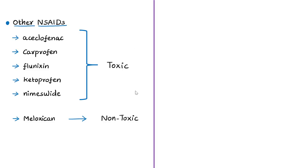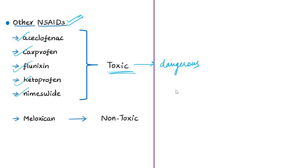According to BirdLife International, diclofenac is only one of over a dozen NSAIDs available in India. Other NSAIDs like acyclofenac, carprofen, flunixin, ketoprofen, and nimesulide are also toxic and dangerous for vultures, and their threat is arguably far greater than diclofenac because they are still legal. However, there is one NSAID called meloxicam which is non-toxic to vultures.